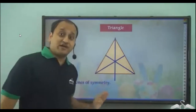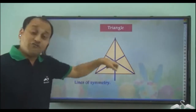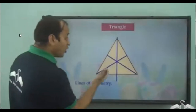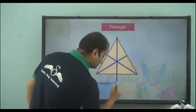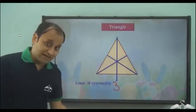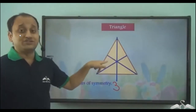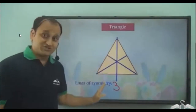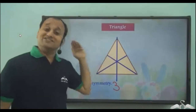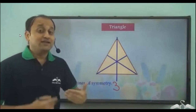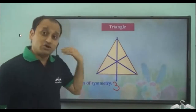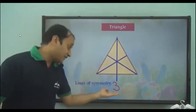This is a special kind of triangle in which all the sides are of the same length, and that's why we got three lines of symmetry. In this triangle, you can try to draw any number of lines but you will get only three — none of the other lines will give you a line of symmetry. So in this kind of triangle, you have only three lines of symmetry.